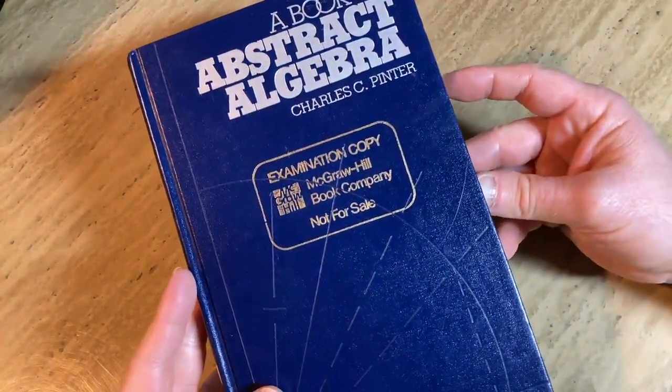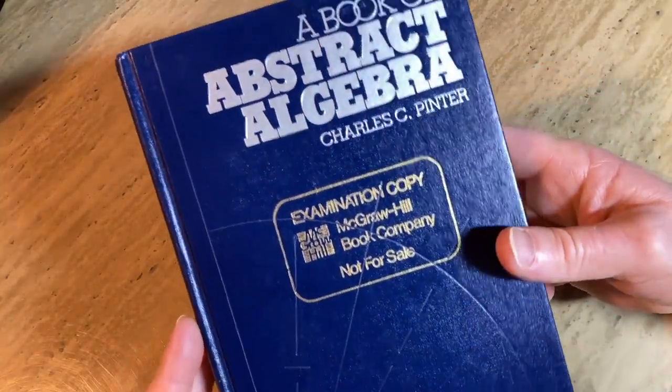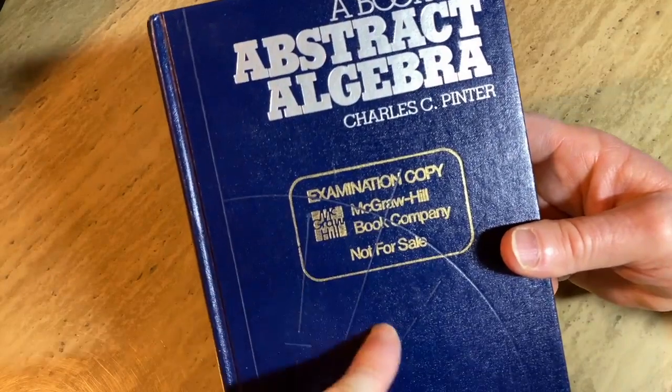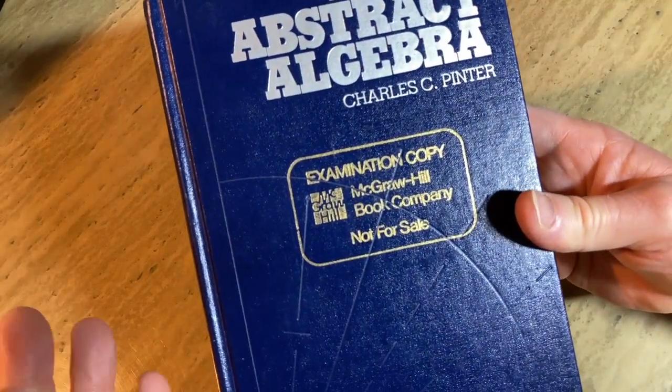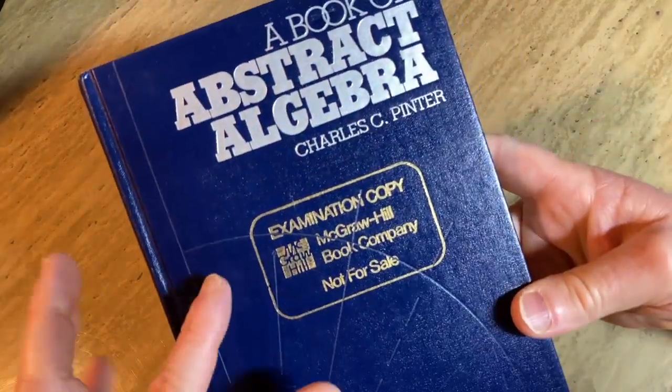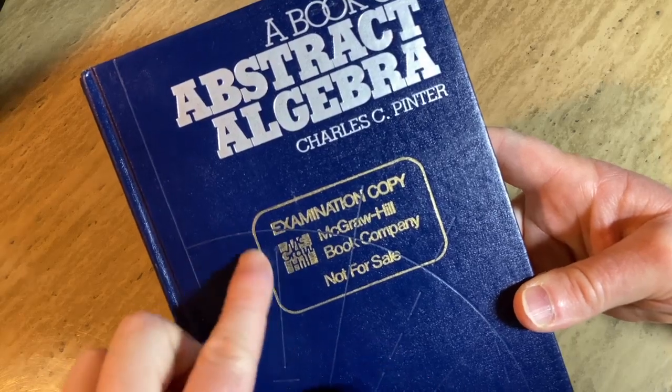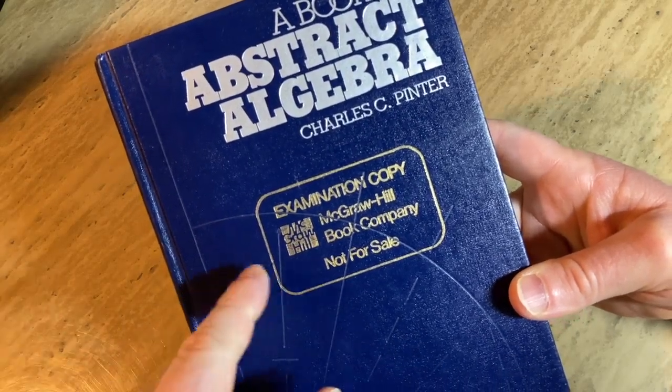I decided to buy the Pinter book and check it out, and I think it is an excellent book. So in this video, I want to show you the Pinter book, and my copy is super cool. It's got like, I think it's a compass. If you know what it is, let me know. Leave a comment, and then it says here, examination copy, and look how it's like stamped, not for sale.